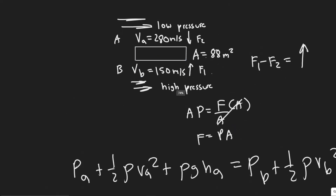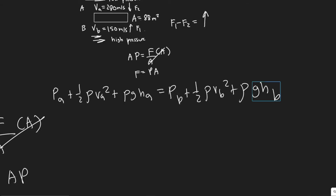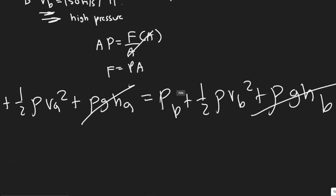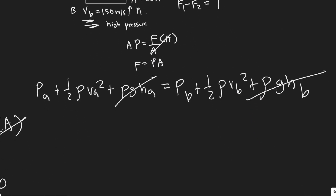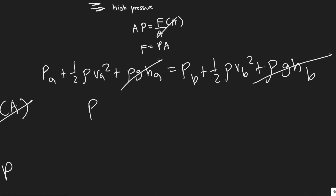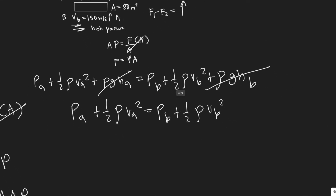The first thing to notice is that rho*g*h for both points is going to be the same because their heights are essentially the same — so we can eliminate those terms. That leaves us with: PA plus one-half rho VA squared equals PB plus one-half rho VB squared.